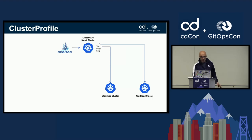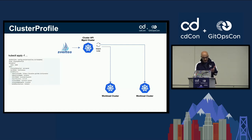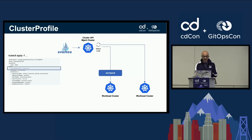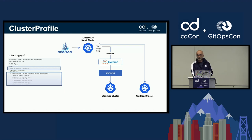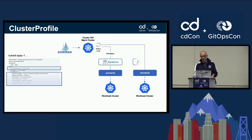Here's an example. We have a management cluster with Cluster API to bring up new Kubernetes clusters, and we have Sveltos. I post to the management cluster a ClusterProfile selecting all clusters with label environment production, simply asking to deploy the Kyverno Helm chart version 2.5.0. As soon as we add the label environment production on one of the clusters, Sveltos detects that this cluster is now a match for the ClusterProfile, takes all the resources listed — in this case just Kyverno — and deploys them in that cluster. Likewise, if we add the same label on a second managed cluster, Sveltos does the same cycle again.